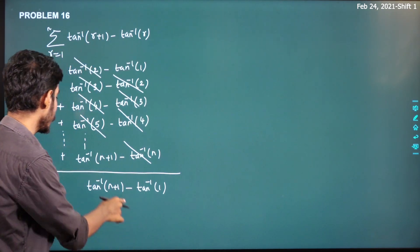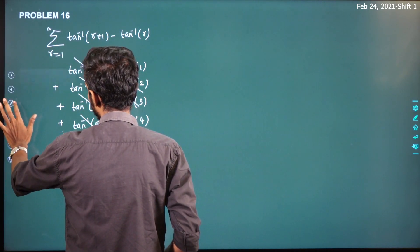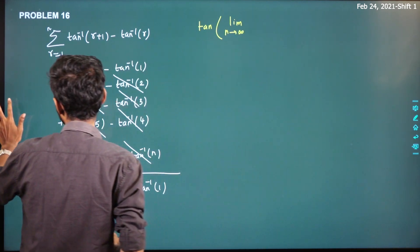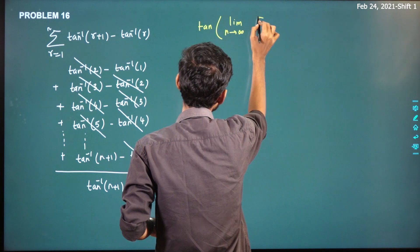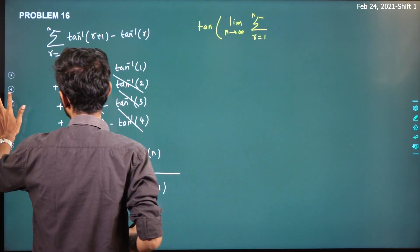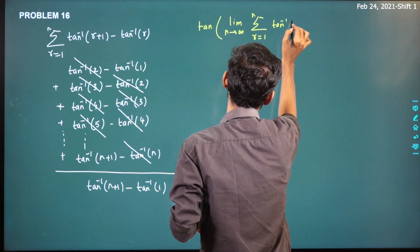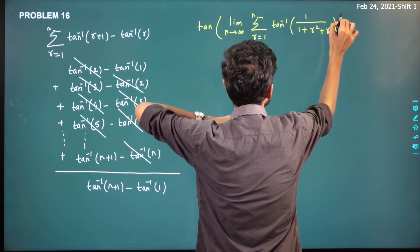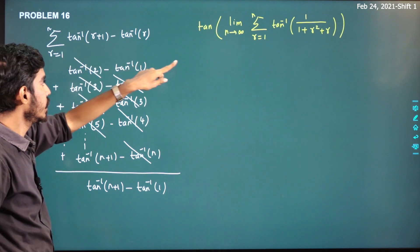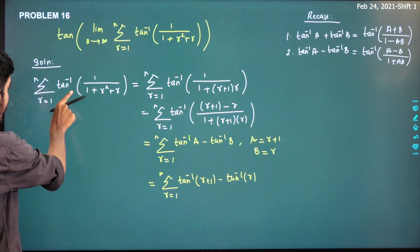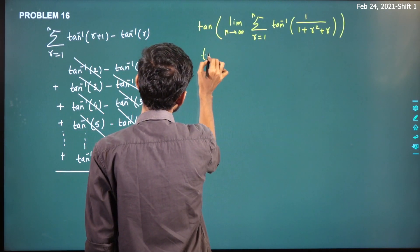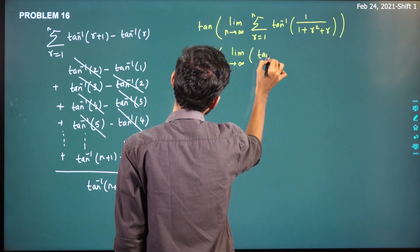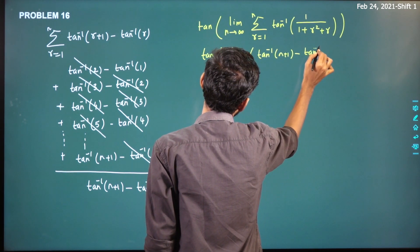So what we need to find is: tan of limit n tending to infinity, of summation r equals 1 to n of tan inverse of 1 divided by 1 plus r squared plus r. This summation value equals tan inverse of (n plus 1) minus tan inverse of 1. So we need to find: tan of [limit n tending to infinity of (tan inverse of (n plus 1) minus tan inverse of 1)].